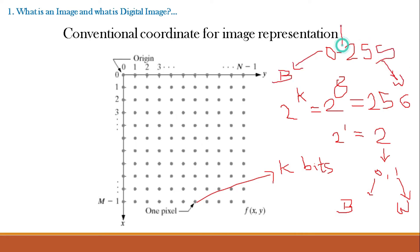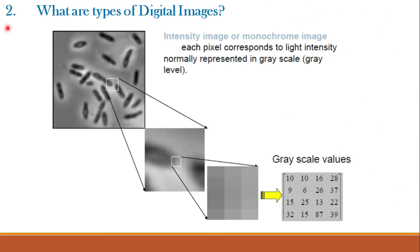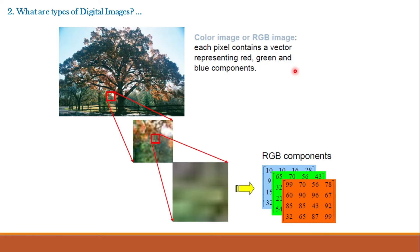Let us look at different types of digital images. An intensity image or monochrome image has each pixel corresponding to light intensity, normally represented in grayscale or gray level. When you zoom into a portion of such an image, you see different intensity values — for example, a dark pixel having value 10 (near 0) and a bright pixel having value 28. A color image or RGB image represents each pixel as a vector containing red, green, and blue components. Different pixels are represented by a vector of all three RGB components.